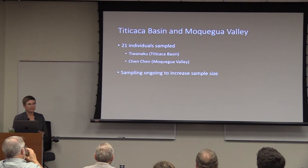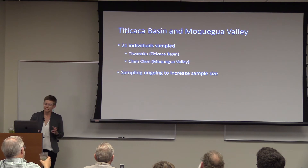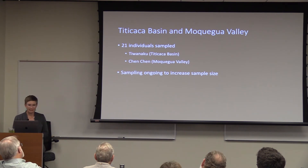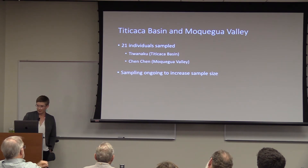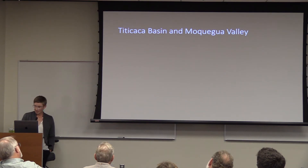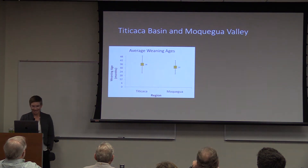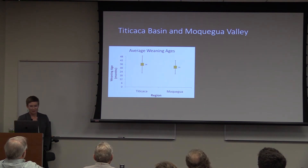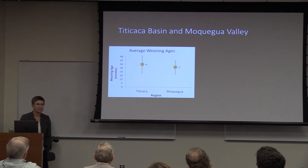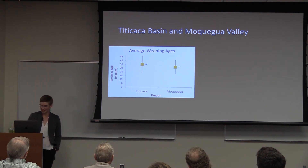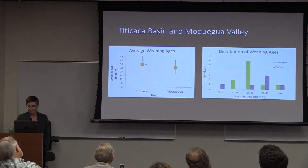I'm dividing Tiwanaku Empire individuals into two areas: the Titicaca Basin and the Moquegua Valley. I've sampled 21 individuals so far, though sampling is ongoing. I have much less sophisticated data than for California, but I have average weaning ages, which appear to be pretty high. Among people living in the Titicaca Basin, the average weaning age is around 36 months. In the Moquegua Valley it's slightly lower — around 32 months — though not statistically significant. These averages don't quite tell the whole story.